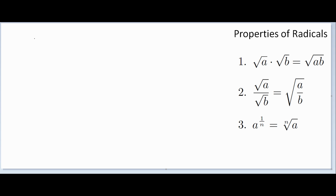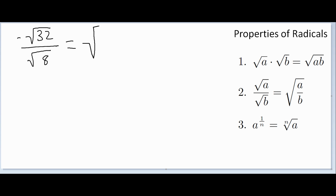With the second property we can also go left to right or right to left. For example, the square root of 32 over the square root of 8: property 2 lets us combine these under the same radical as the square root of 32 over 8. Since 32 over 8 simplifies to 4, that's the square root of 4, which is just 2.